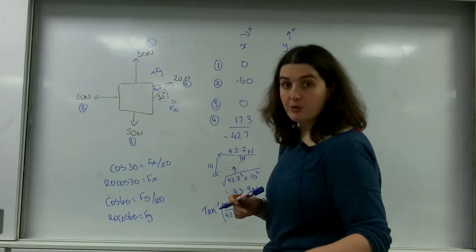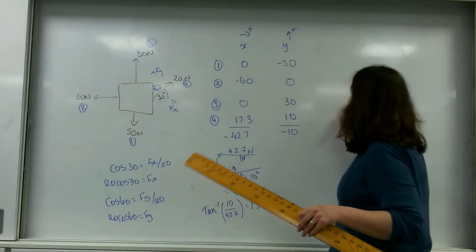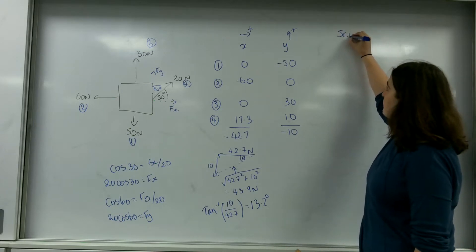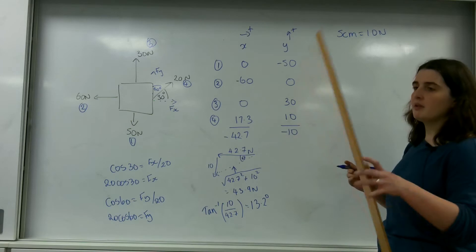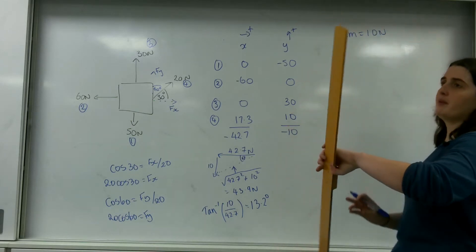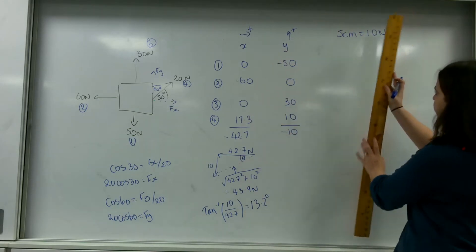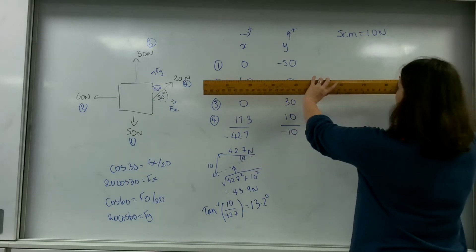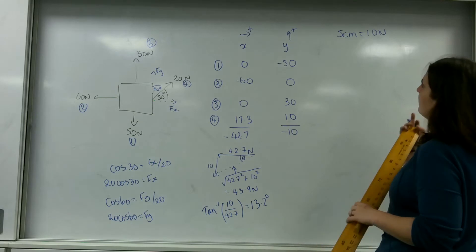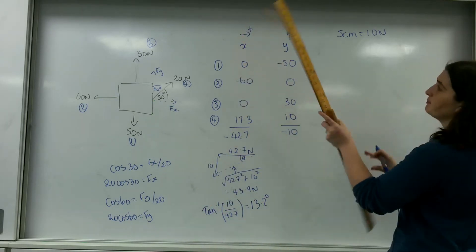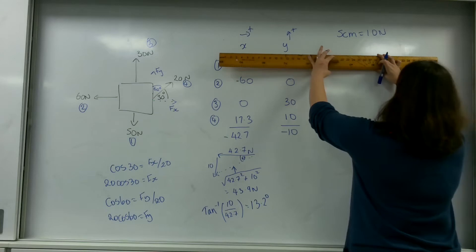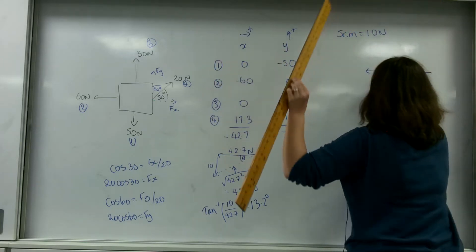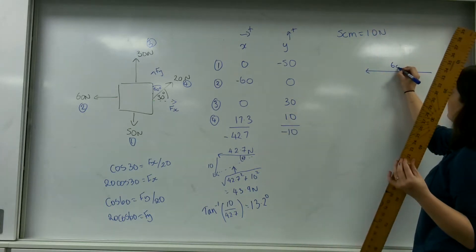Now what I'm going to do is draw a scale diagram. We're going to do this here. So I'm going to say that 5 centimeters is 10 newtons. So 15 centimeters. We're going to do 60 this way. So 60 is 30 centimeters this way. So that's my 60 newtons.